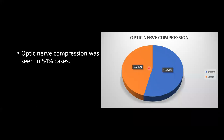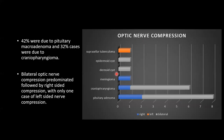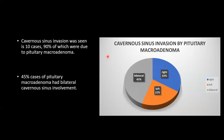Optic nerve compression was seen in 54% of cases. 42% of optic nerve compressions were due to pituitary adenoma and 32% were due to craniopharyngioma. Bilateral optic nerve involvement predominated, followed by right-sided involvement, with only one case of left-sided nerve compression, which was seen in suprasellar tuberculoma. Cavernous sinus invasion was seen in 10 cases, 90% of which were due to pituitary macroadenoma. 45% had bilateral involvement, 33% had right-sided involvement, and 22% had only left-sided involvement.